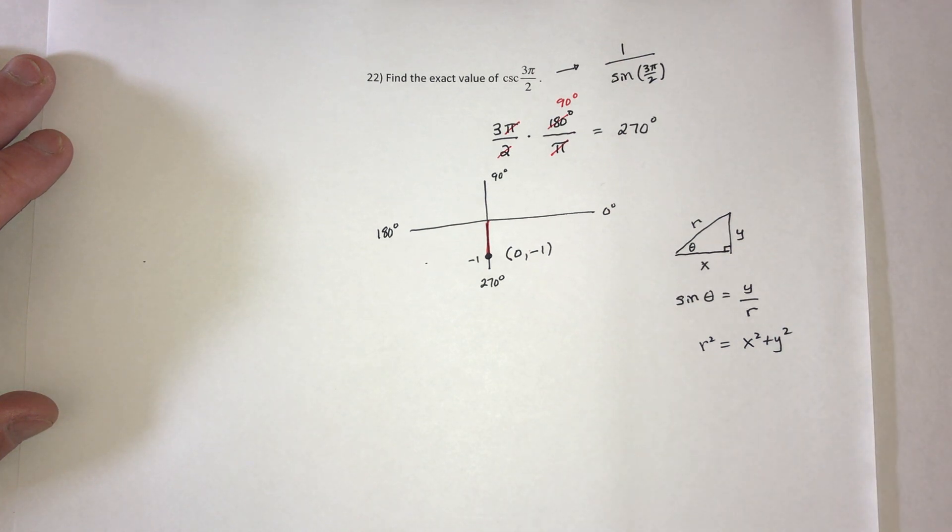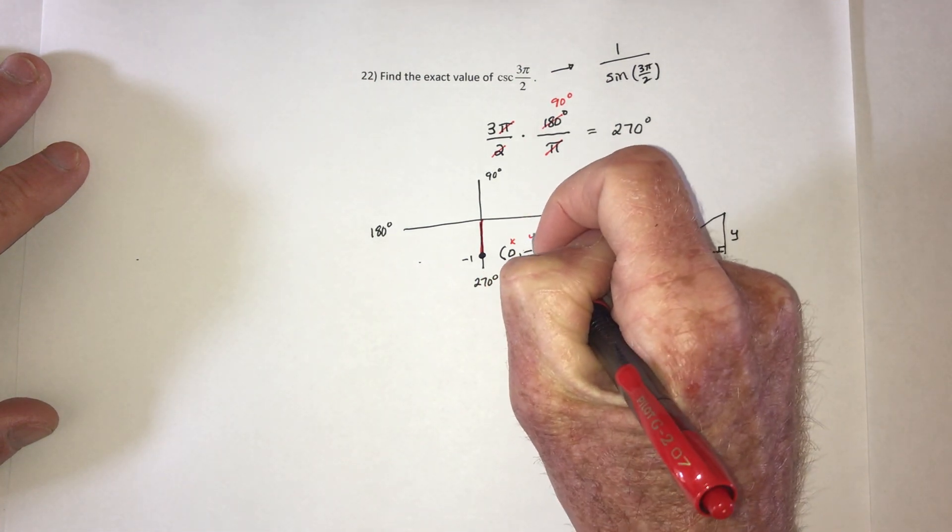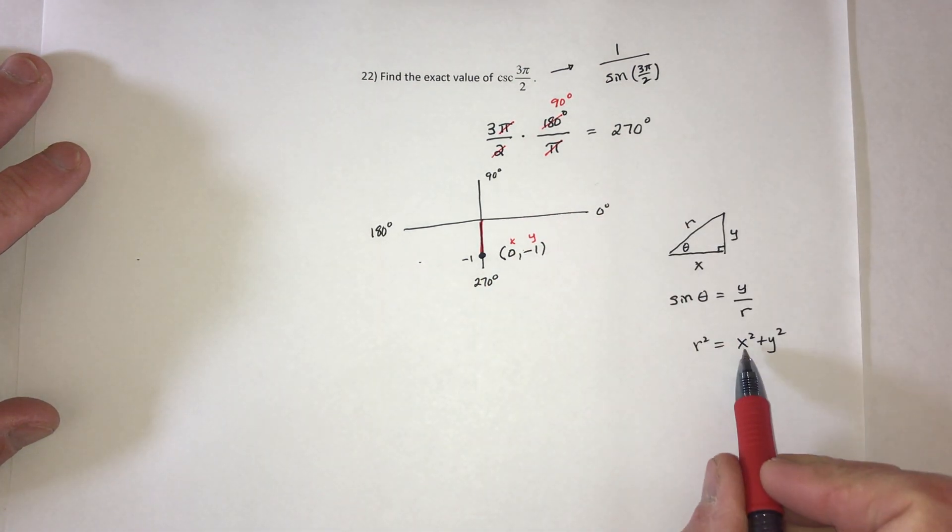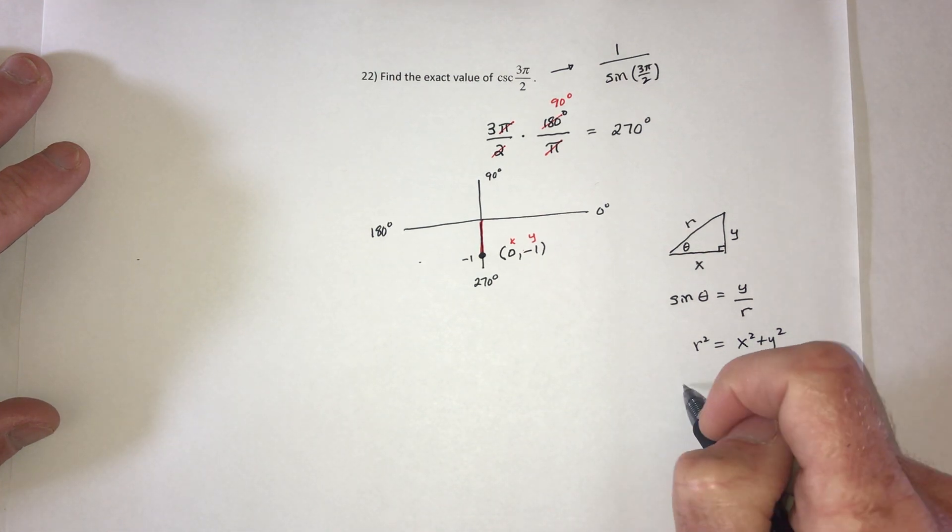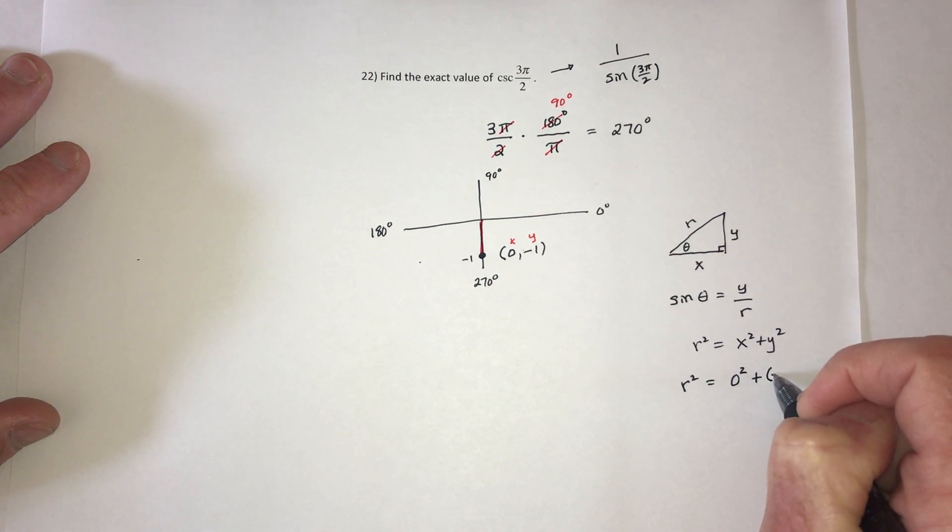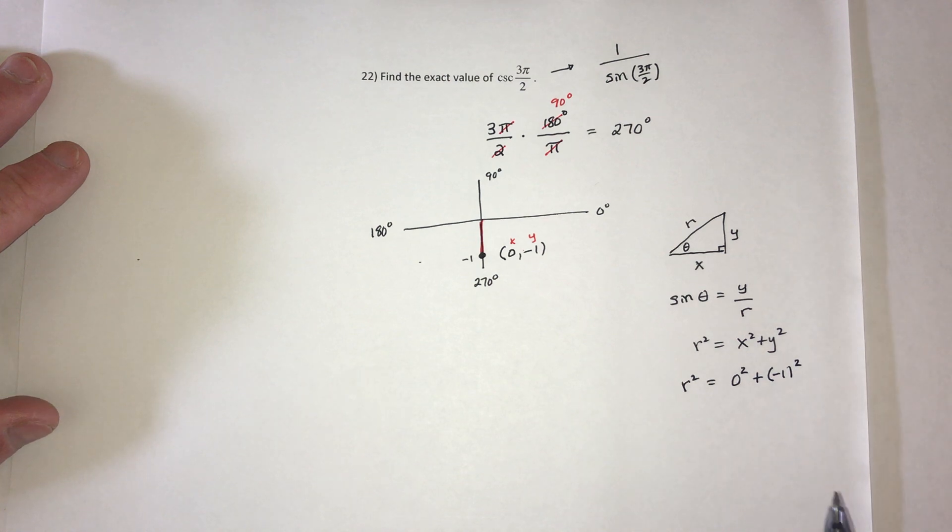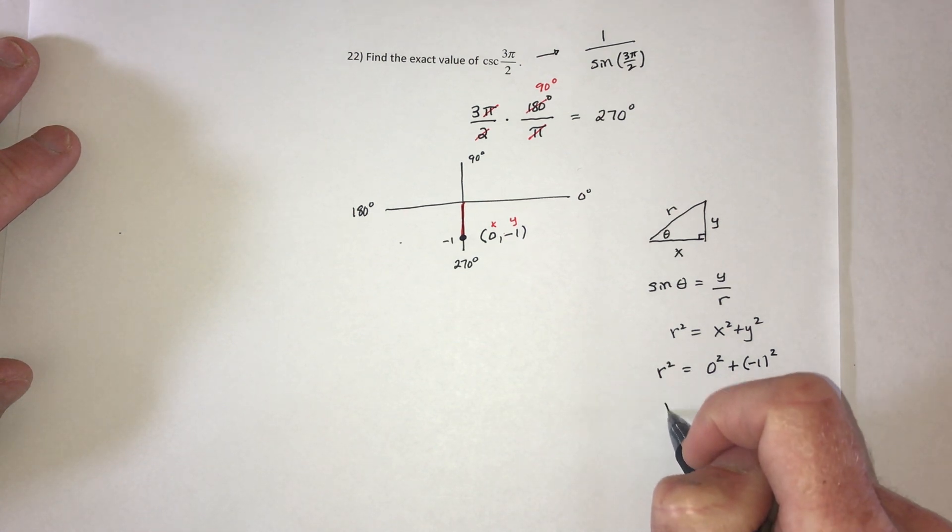Now back to this. So this is what x equals and this is what y equals. I could plug those in right here and then find out what r equals. So r² is equal to x², so that's 0² plus negative 1². When you square this negative 1 it's going to become a positive 1, and then a 1 plus a 0 is just 1.